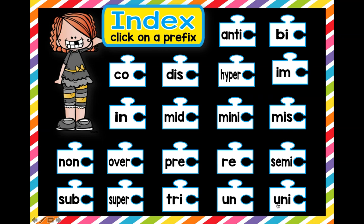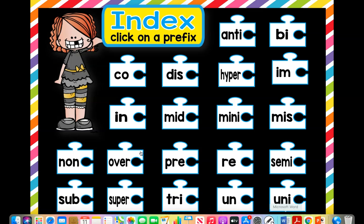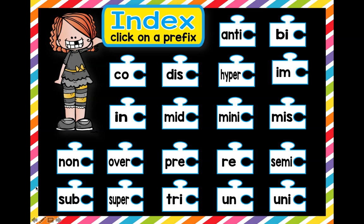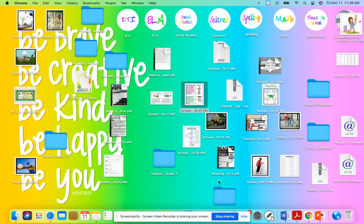Now it's time to take your exit ticket. Anti means against. Bi means two. Co means together or with. Hyper means excessive, exaggerated, or extreme. And im means not — like dis and un also mean not. Go ahead and take your exit ticket. I am excited to see what you learned.